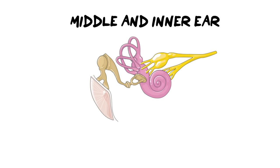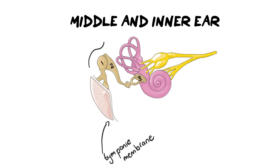I've zoomed in now so we can see the tympanic membrane on its own. We're going to focus more on the middle and inner ear. You'll notice the tympanic membrane has quite a large surface. Attached to it are three bones — those three bones collectively are called the ossicles. The ossicles' main function is what we call amplification.